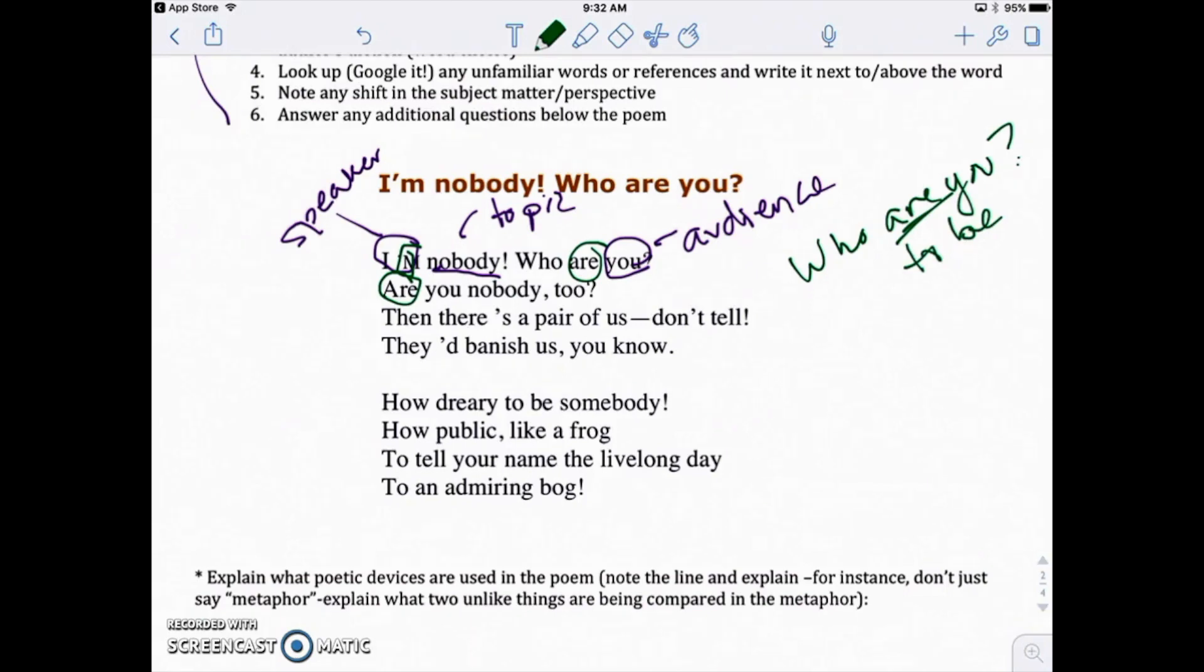That's our big verb to be, right? Then there's a pair of us. Don't tell. Once again, there's the word is in there, right? Those are usually not that powerful when it comes to verbs. However, the word is and are and to be because it's just a sense of being. I think it's pretty important. Don't tell, tell would be another powerful verb there. They'd banish us. I think this right here is probably our first really powerful verb there. They'd banish us. You know, how dreary to be somebody.